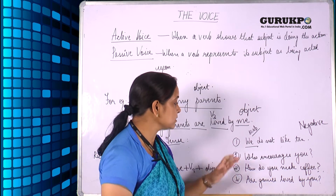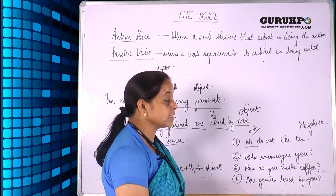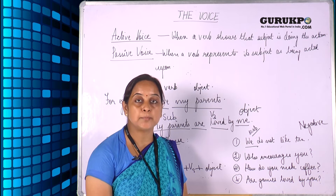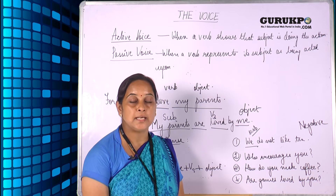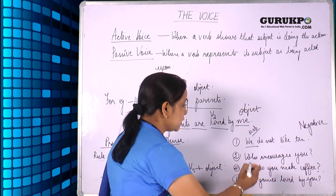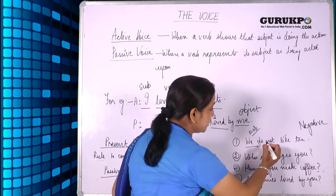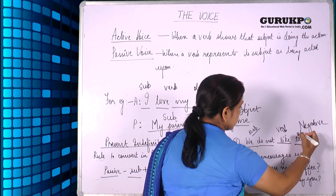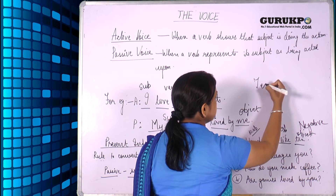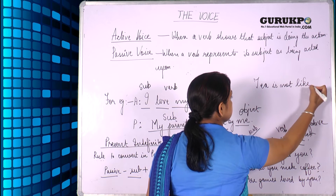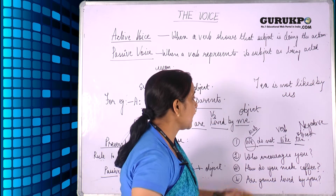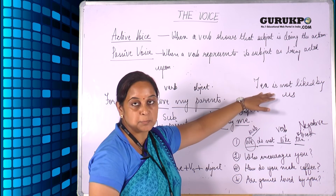Now we will take examples of the present indefinite tense. Here we have the sentence 'We do not like t.' As we can see, this is a negative sentence. The negative will remain negative in the passive voice — we will not change the nature of the sentence. If it is affirmative, it will remain affirmative; if it is interrogative, it will remain interrogative. We only convert the voice. 'We do not like t' — here 'we' is the subject, 'like' is the verb, and 't' is the object. So the object becomes the subject in passive voice, and this sentence becomes: 'T is not liked by us.' Here 'we' becomes 'us,' and 'liked' is the third form of the verb — the verb is experiencing the action.